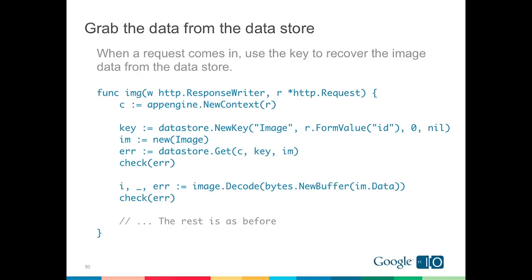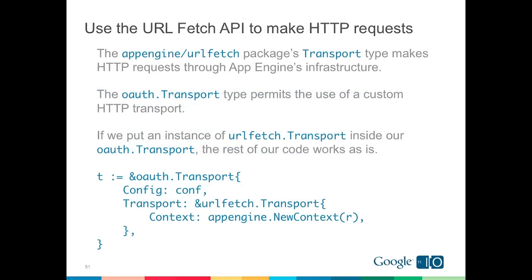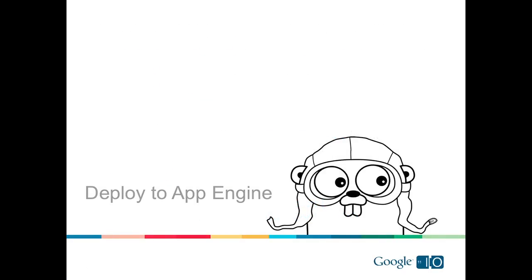Another major difference on App Engine is you can't just read and write network sockets — you have to use the URL Fetch API. There are adjustments needed to the OAuth flow, but it doesn't change all that much. The URL Fetch API has a concept of a transport that lets you describe how to make requests through App Engine infrastructure to general HTTP interfaces. We take the OAuth transport mechanism and insert it into the URL Fetch transport structure by constructing one of these transport objects. Having done that, it all just flows together.